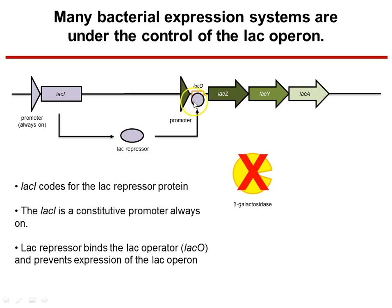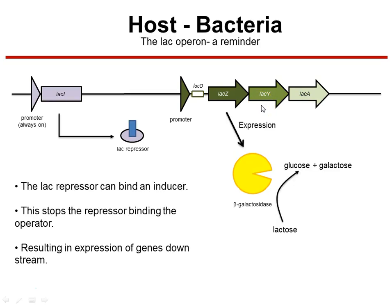When this repressor is bound to the LAC operator, these genes cannot be expressed. In the presence of lactose, however, this repressor drops off, and the promoter can be activated, allowing any gene downstream to be turned on. It's a little bit more complicated than that — if glucose is present, the repressor will stay on. If you want to read more on the LAC operator, I've put a link in the description to this video.